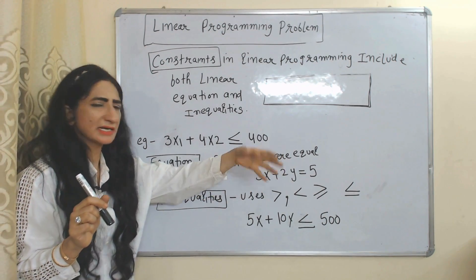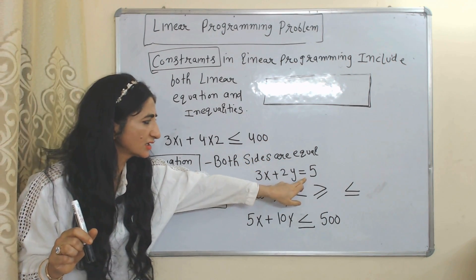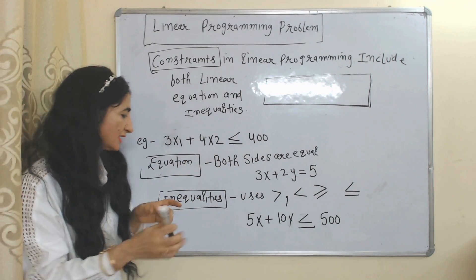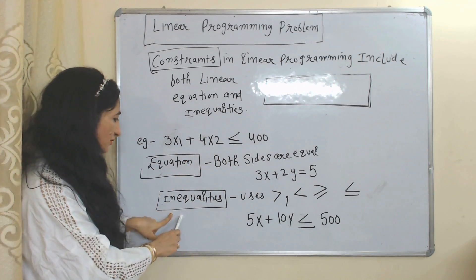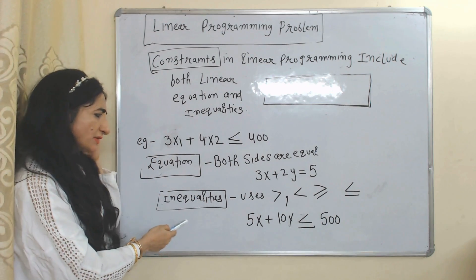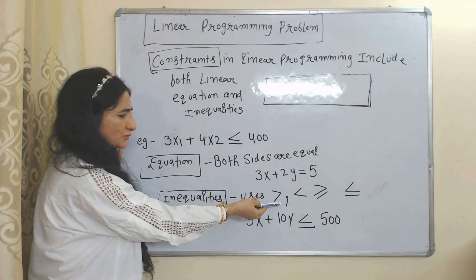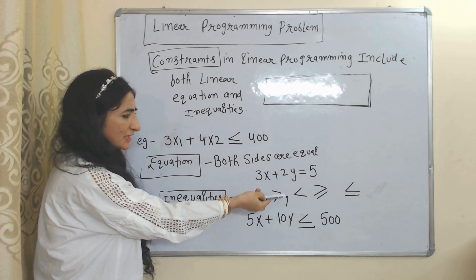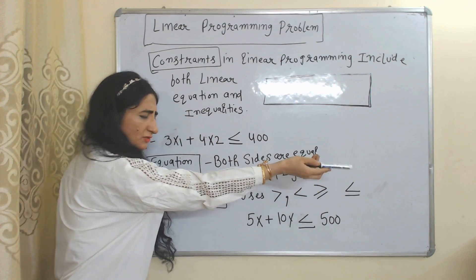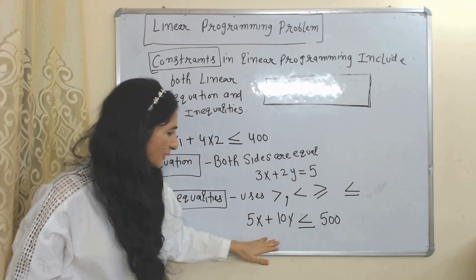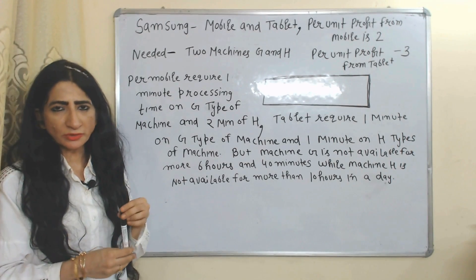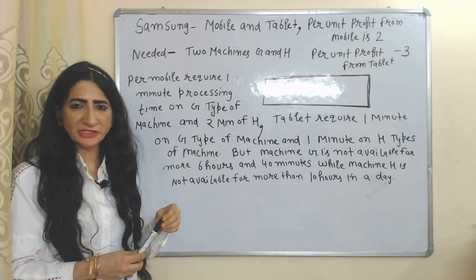Constraints mainly have two forms. The first is an equation, where both sides are equal to each other — the equal sign represents that. The second way to represent a constraint is inequality, where we use signs such as greater than, less than, greater than or equal to, or less than or equal to. This represents inequality.